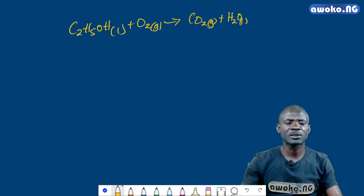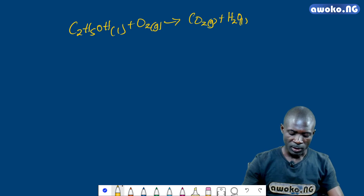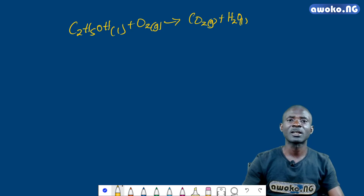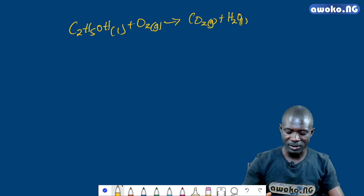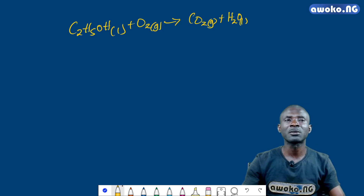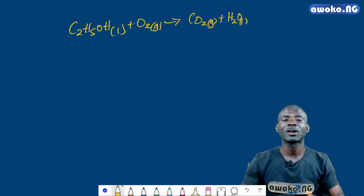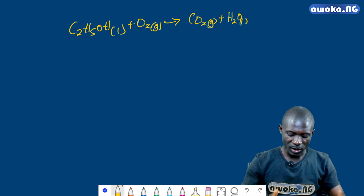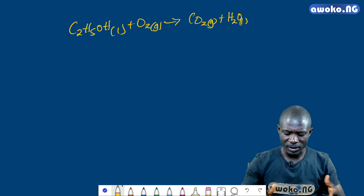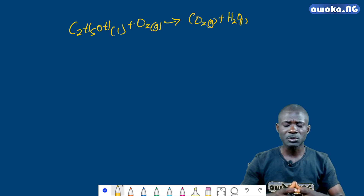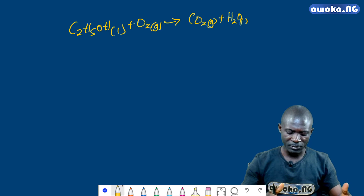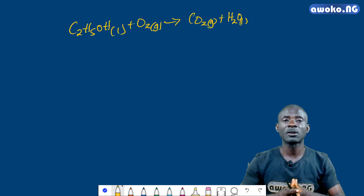Now after representing the reaction, the next step is to balance the number of atoms on both sides. Our rule is to balance the free element last, which here is oxygen. On my left-hand side I have three atoms of oxygen; on my right-hand side I have two atoms of oxygen. The relationship between three and two gives a common multiple of six.